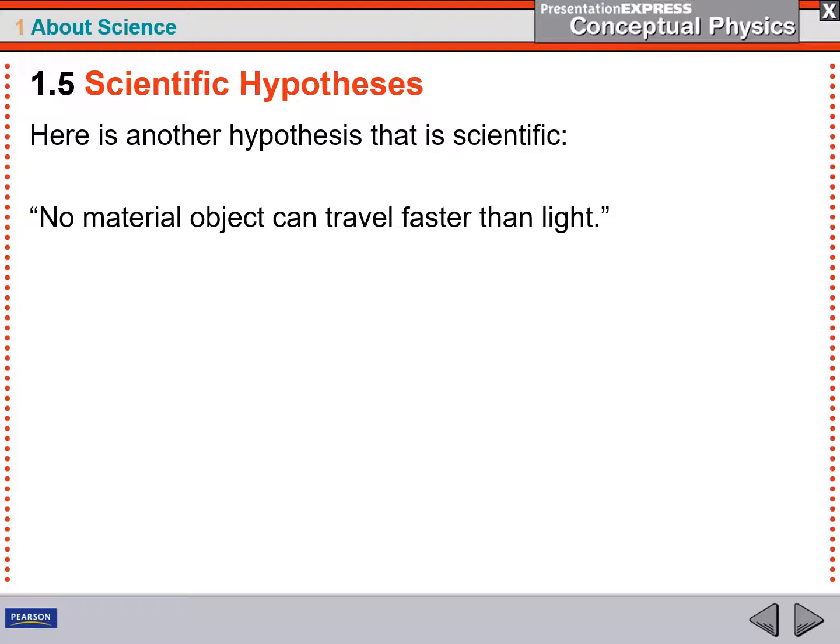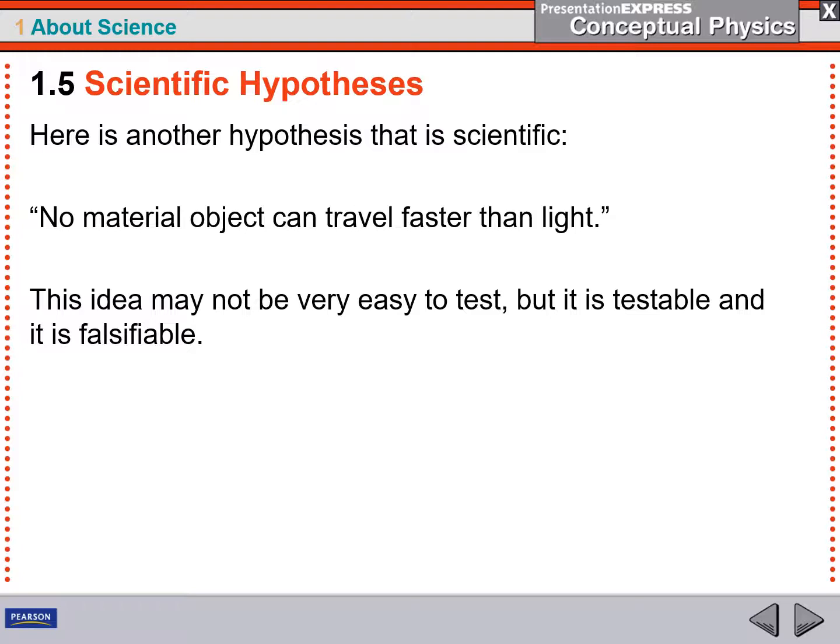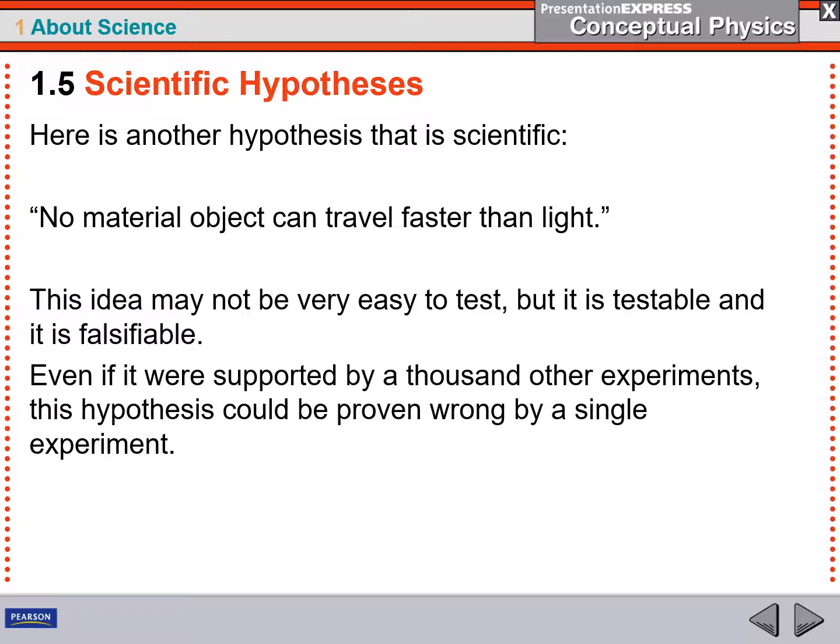Here's another hypothesis. No material object can travel faster than light. This idea may not be very easy to test because how do you measure things that are going at the speed of light? That's kind of hard, but it is testable and it is potentially falsifiable because if we ever find something that goes faster than the speed of light, this hypothesis is wrong.